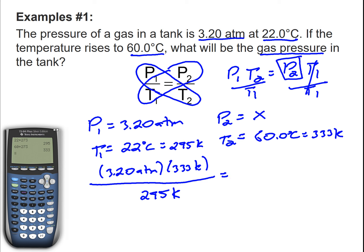Everything's set up correctly. Numbers in the right spot. I'm going to plug into the calculator. 3.20 times 333 divided by 295, and I'm going to get 3.61. And we're talking about pressure, so 3.61 atm.